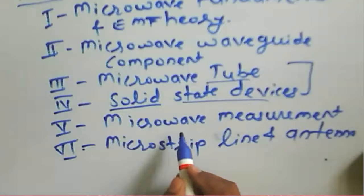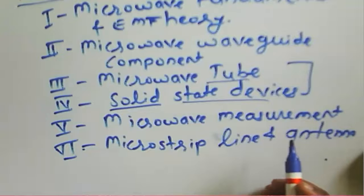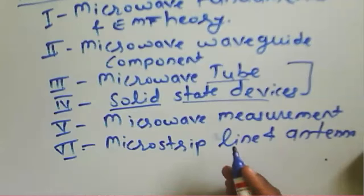In the fifth module we have microwave measurement. Whatever microwave signals are generated or amplified can be measured. The microwave measurement setup covers how to measure signal frequency, amplification, phase of the signal, and power.